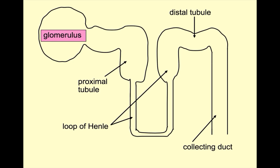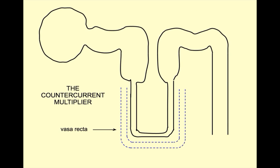The CCM is located in the medulla of the kidney and consists of the loop of Henle and the capillaries surrounding it which are called the vasa recta. The job of the vasa recta is to carry away the solutes and water that are reabsorbed from the loop of Henle and return them to the vascular space.